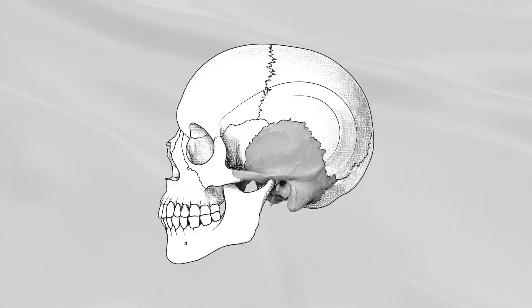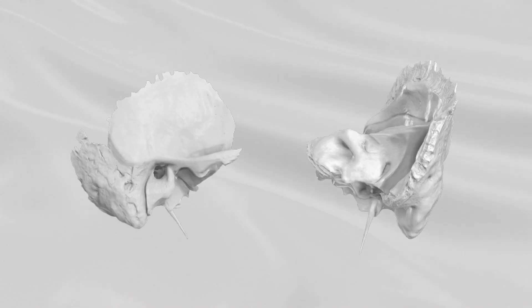Mastoid part: The superior border of the mastoid portion articulates with the mastoid angle of the parietal. The posterior border of the mastoid portion articulates with the inferior border of the occipital bone. Its outer surface is rough and is perforated by numerous foramina. One of these, of large size, situated near the posterior border, is termed the mastoid foramen. The position and size of this foramen are very variable.